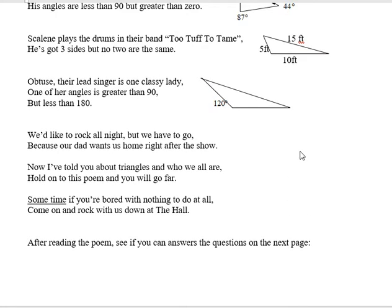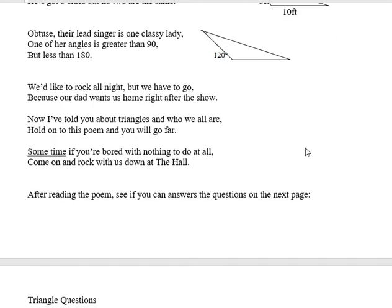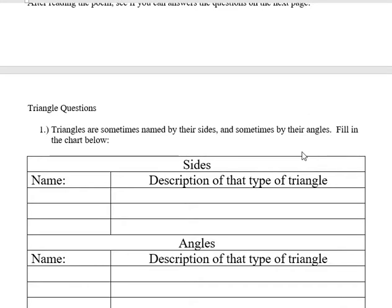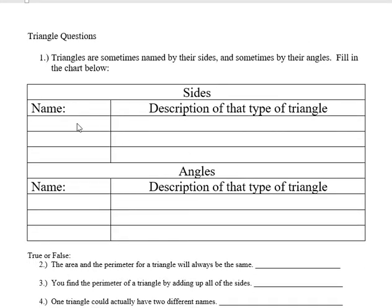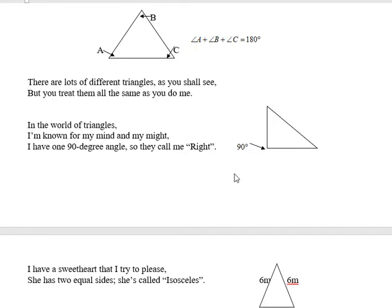I wrote this when I taught middle school for my students to use as a learning tool, and then I had them answer these questions, so we're going to do that too. After reading the poem, can you answer this? What's the name of the triangle and a description of that type of triangle? Notice that some triangles are named for their sides, while others are named for their angles. So let's take a look at the first one.